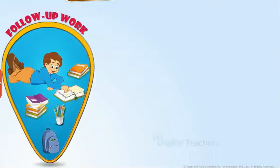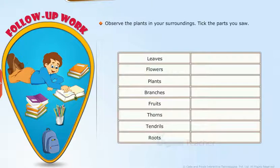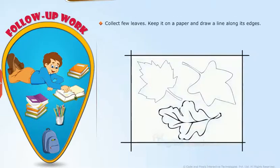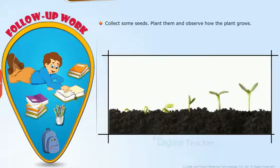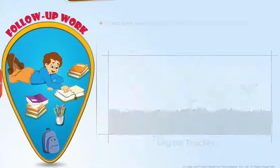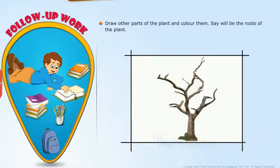Follow-up activities: Observe the plants in your surroundings. Collect a few leaves, keep them on paper, and draw a line along their edges. Collect some seeds, plant them, and observe how the plant grows. Draw other parts of the plant and color them. Consider where the roots of the plant would be.